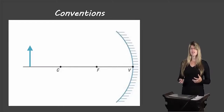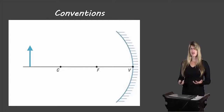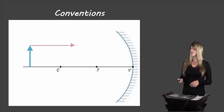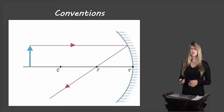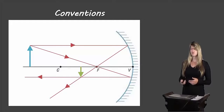Let's start off with the conventions. You should have already watched a video on the mirror equation, so some of these will be familiar and some will be new. We'll start by drawing our ray diagram. We have an object in front of a concave mirror. If we draw a light ray parallel to the principal axis, it will reflect through F. A light ray going through F will reflect parallel to the principal axis, and where they cross is where the top of the image will be.